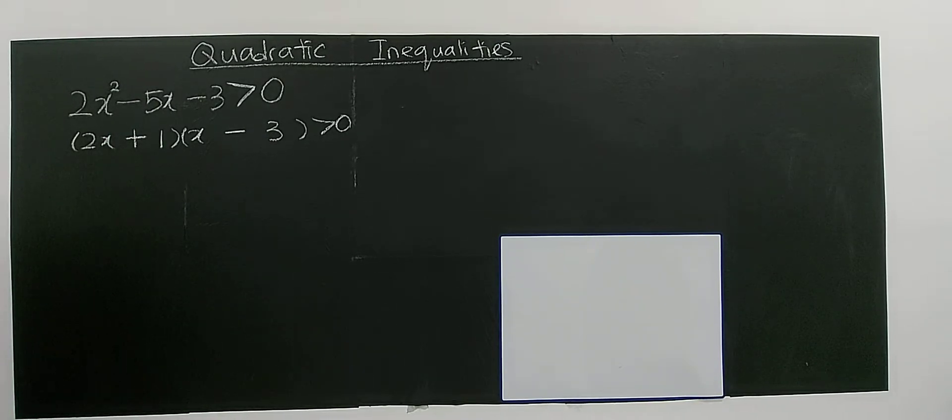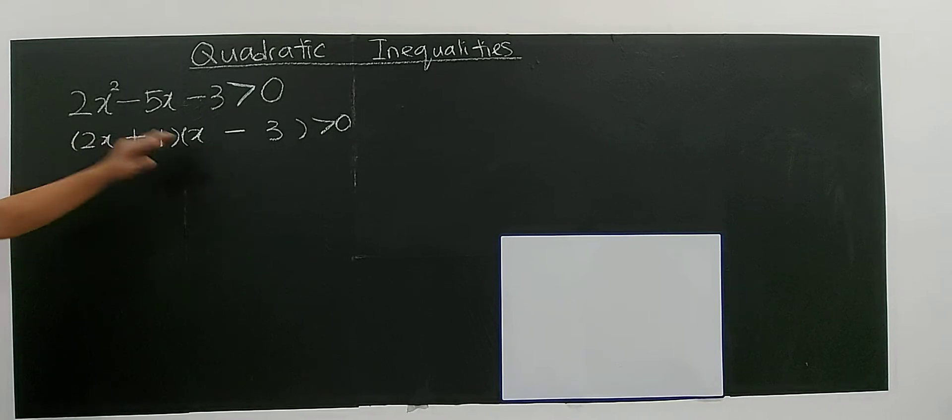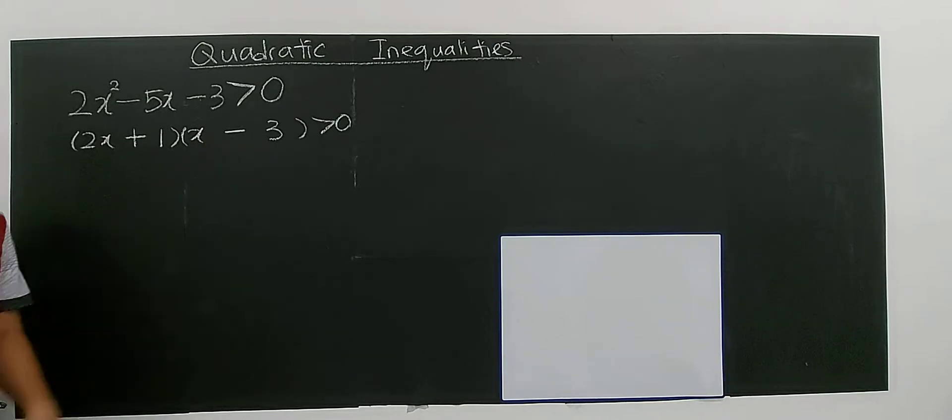So find the two values that will make this inequality become 0. So the value will be negative 1 over 2 and 3.